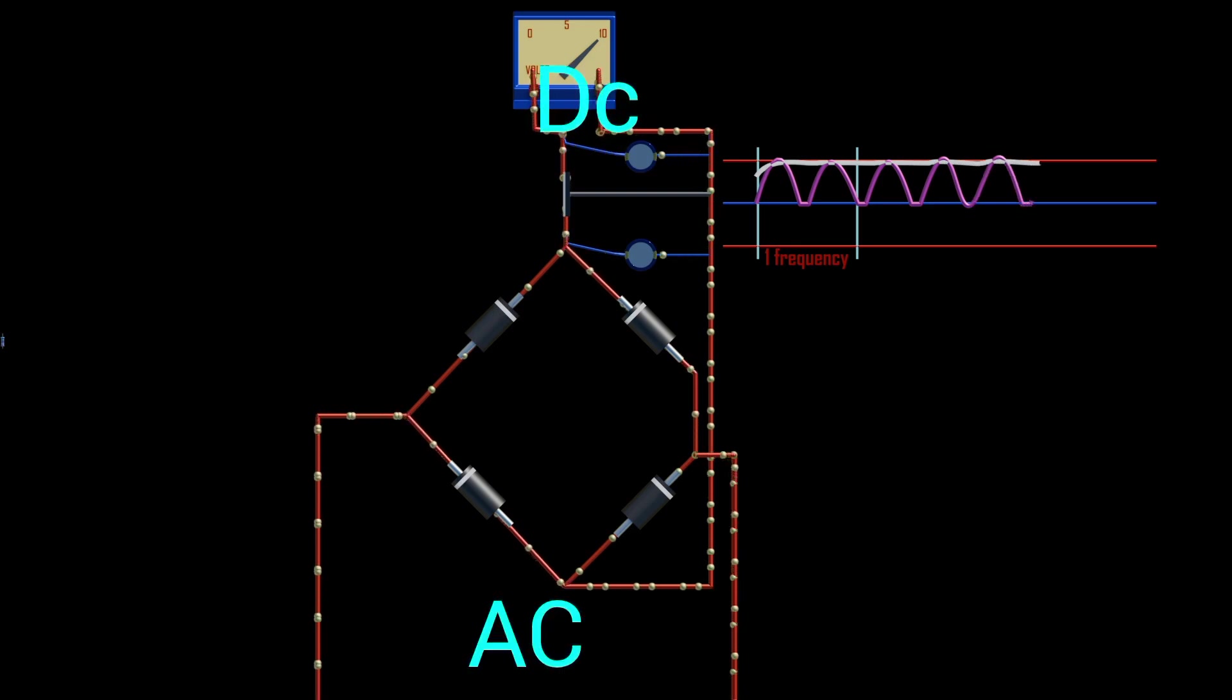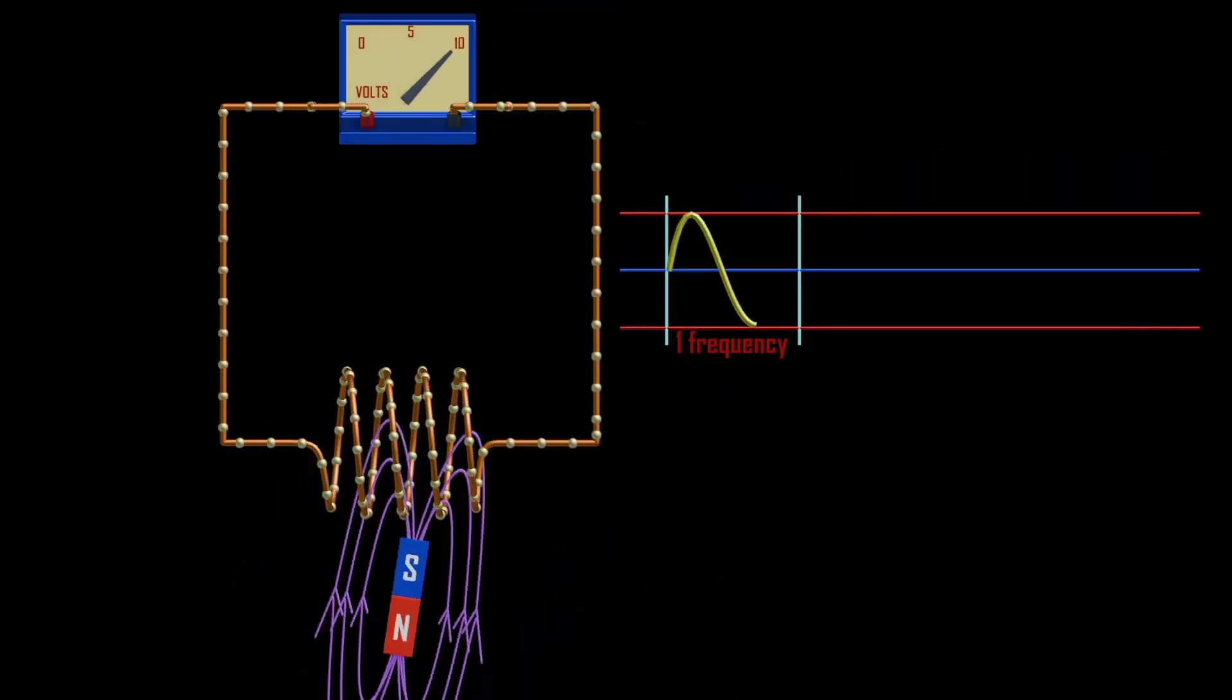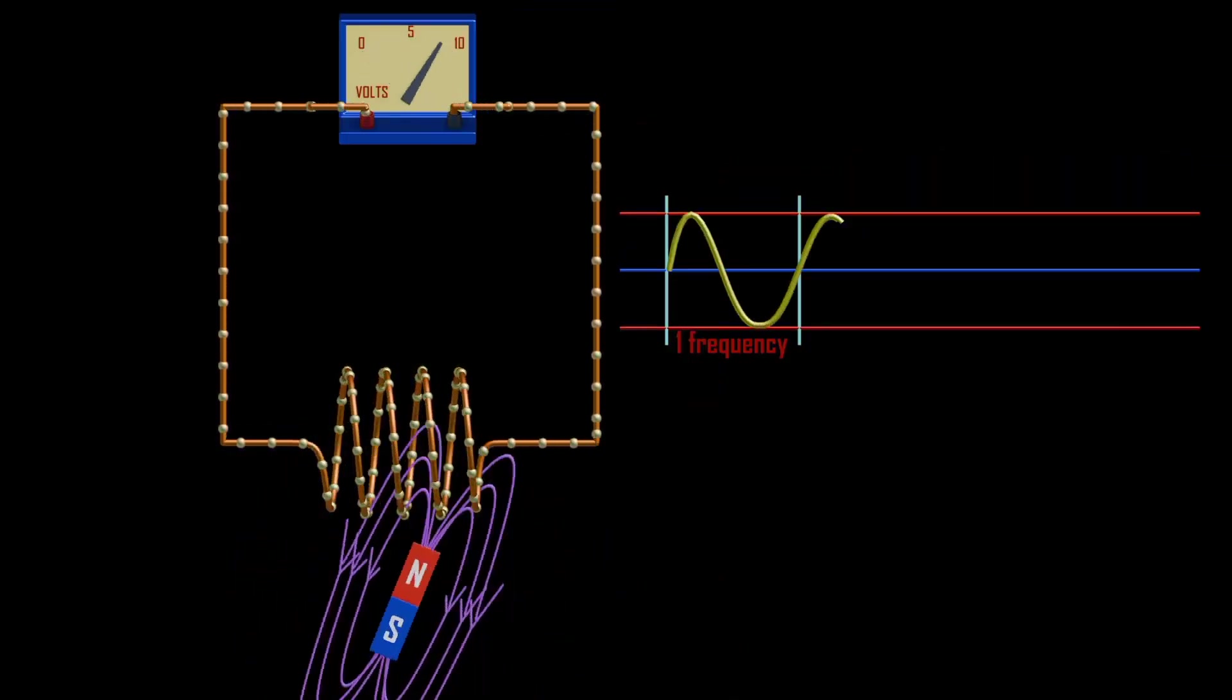Rectification is the conversion of an alternating current into a direct current. This involves a device that only allows one-way flow of electric charge. Let's understand how alternating current works.